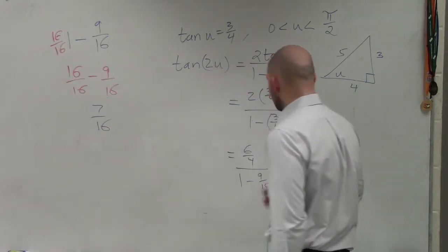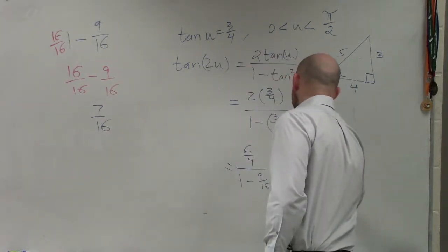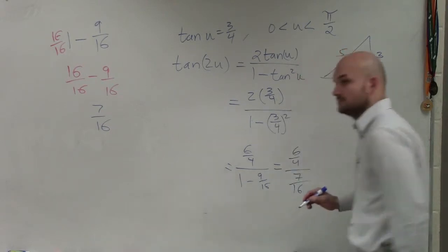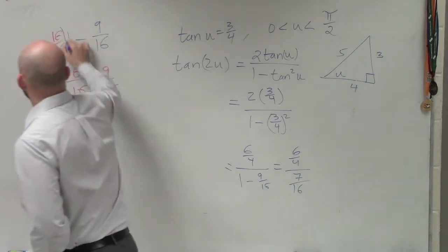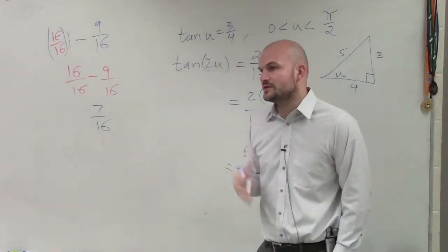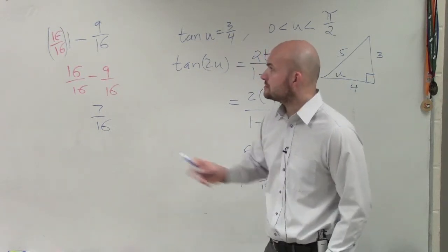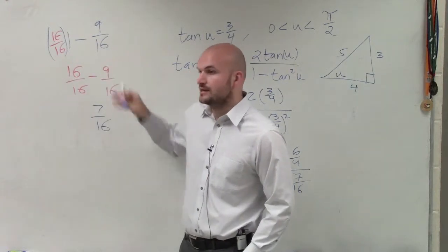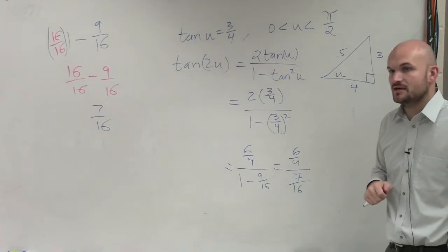So now, I'm just going to start doing my work to the right. So now I have 6 over 4 divided by 7 over 16. I multiply 16 over 16 by 9 over 16? No, just over 1. And then, now you can subtract them. 16 minus 9 is 7.